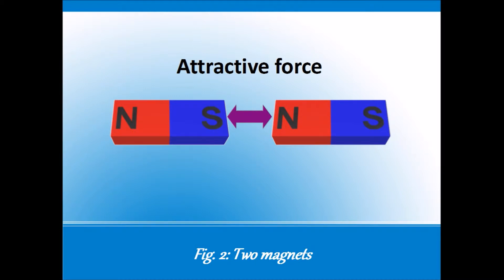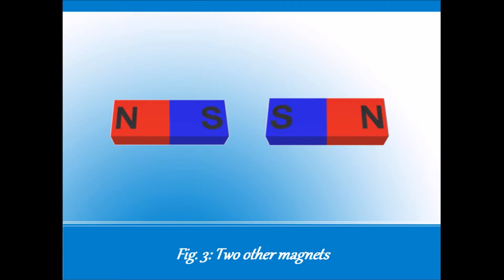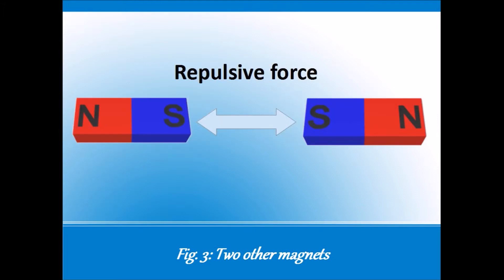But what if you take one magnet and switch it around? Now the south poles are facing each other. Does this make a difference? It sure does. While opposite poles attract, like poles repel. The magnets push each other apart like this. Now it's a repulsive force that comes between them.